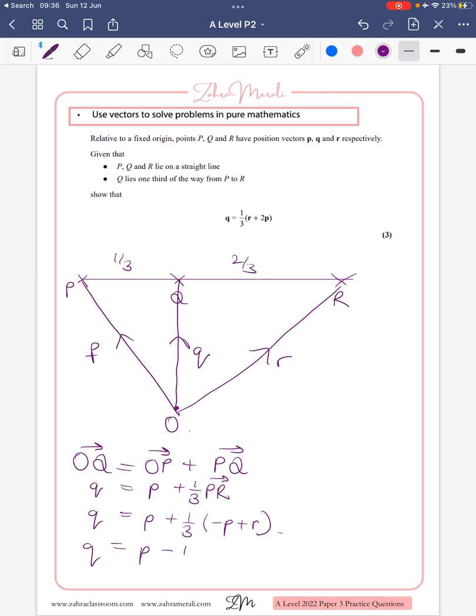If we open out those brackets, we get minus a third p plus a third r. One p minus a third p gives us two thirds p plus one third r. We can take one third outside the bracket, and we have the answer.